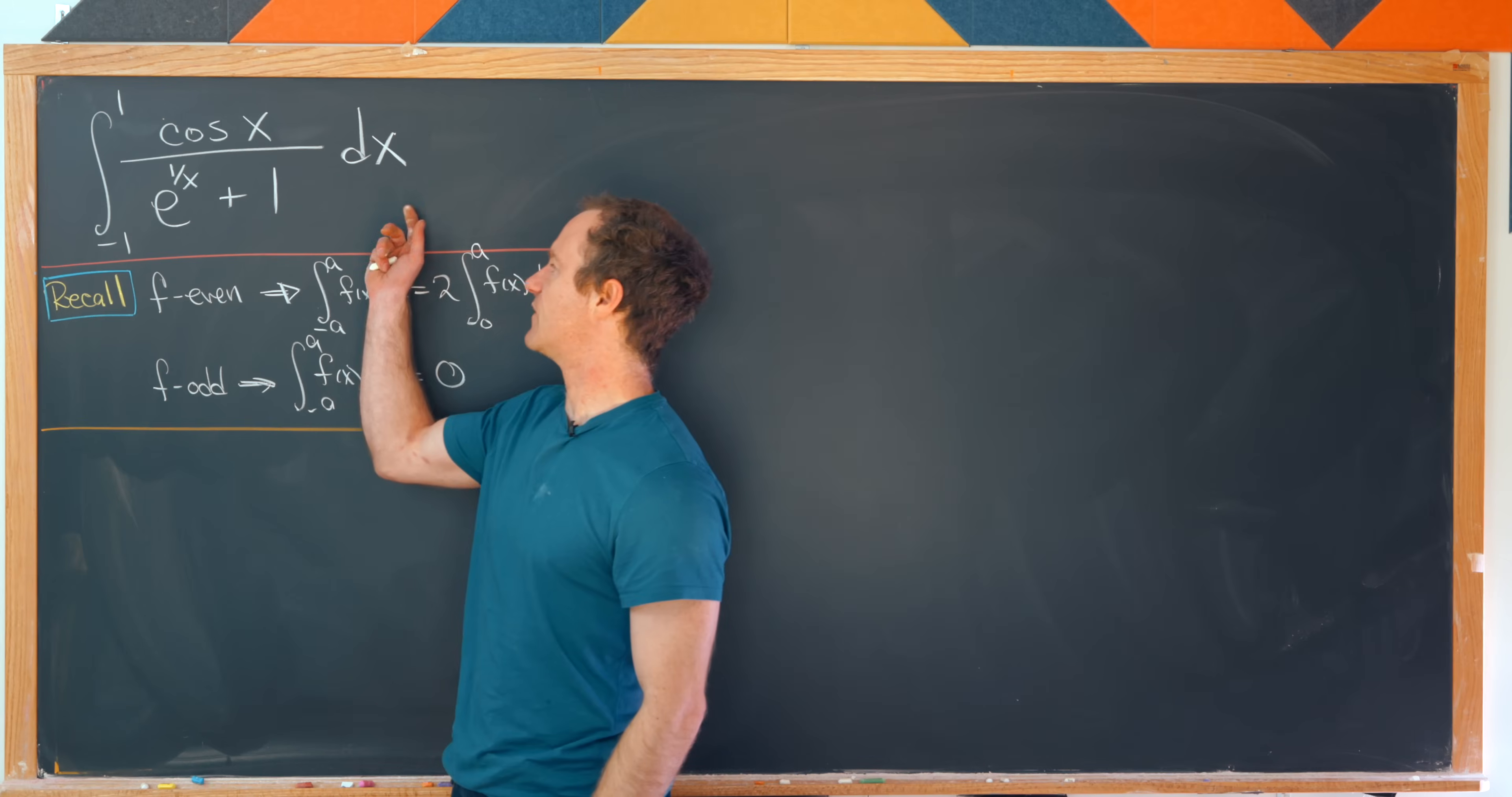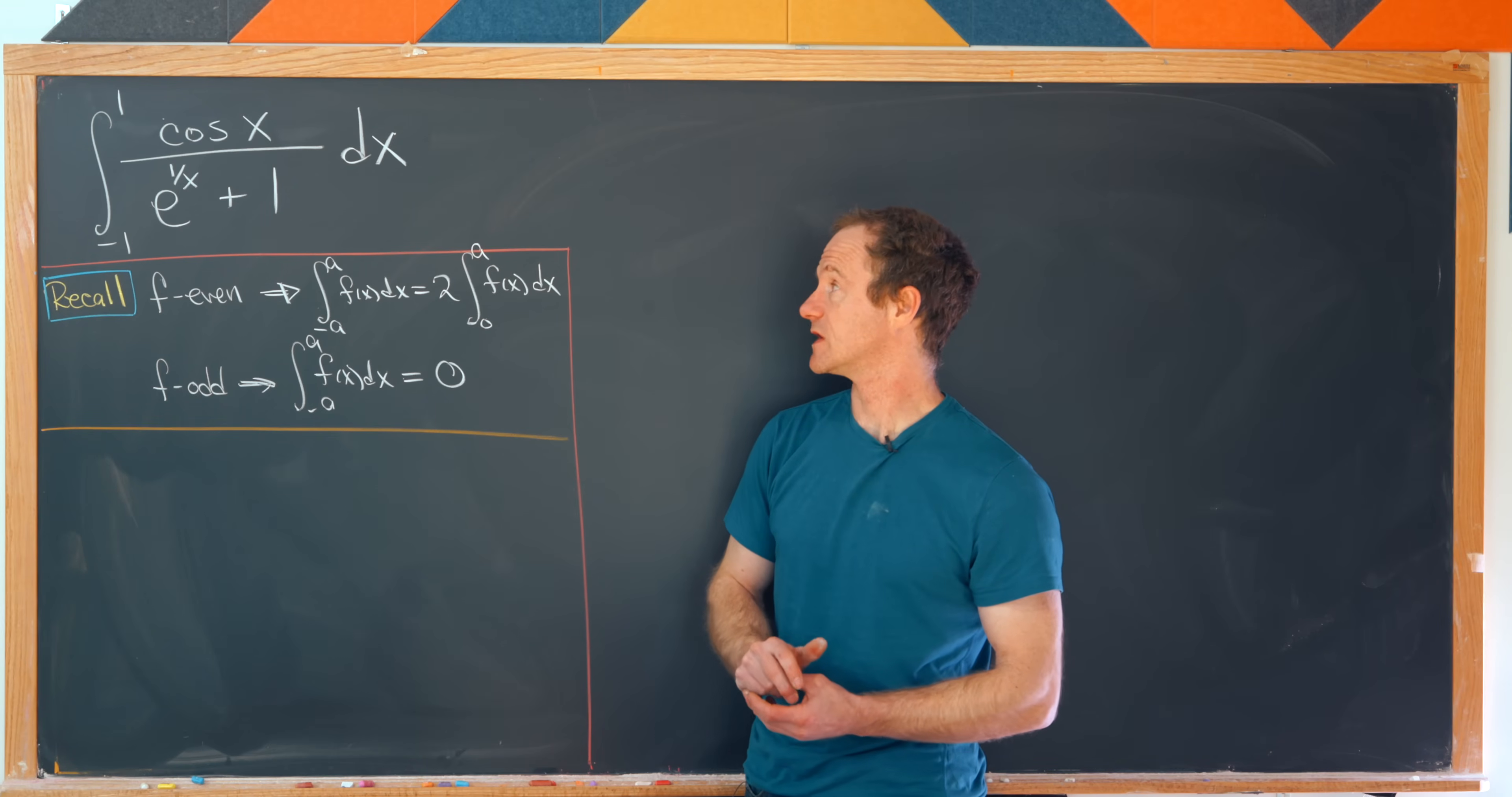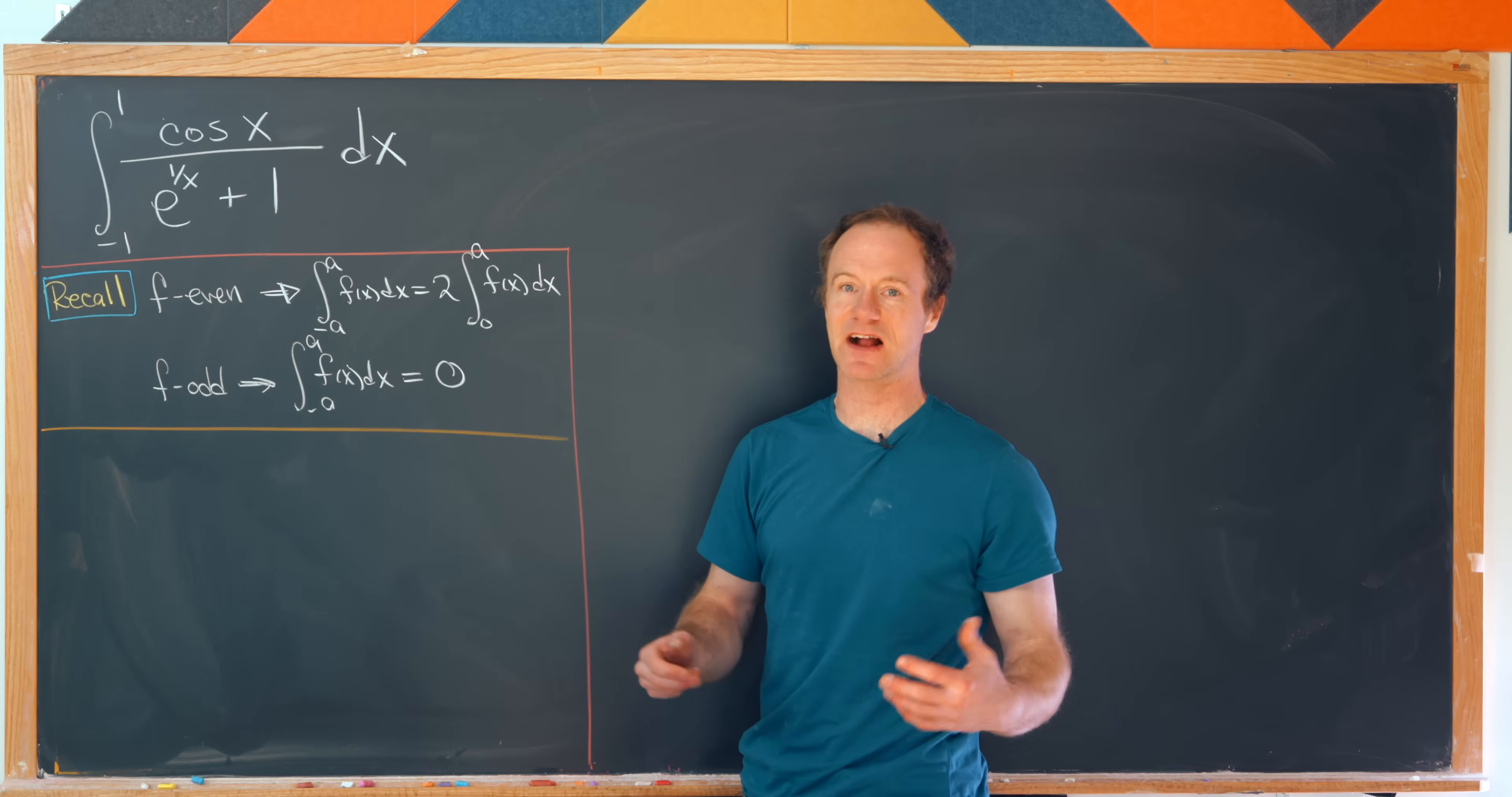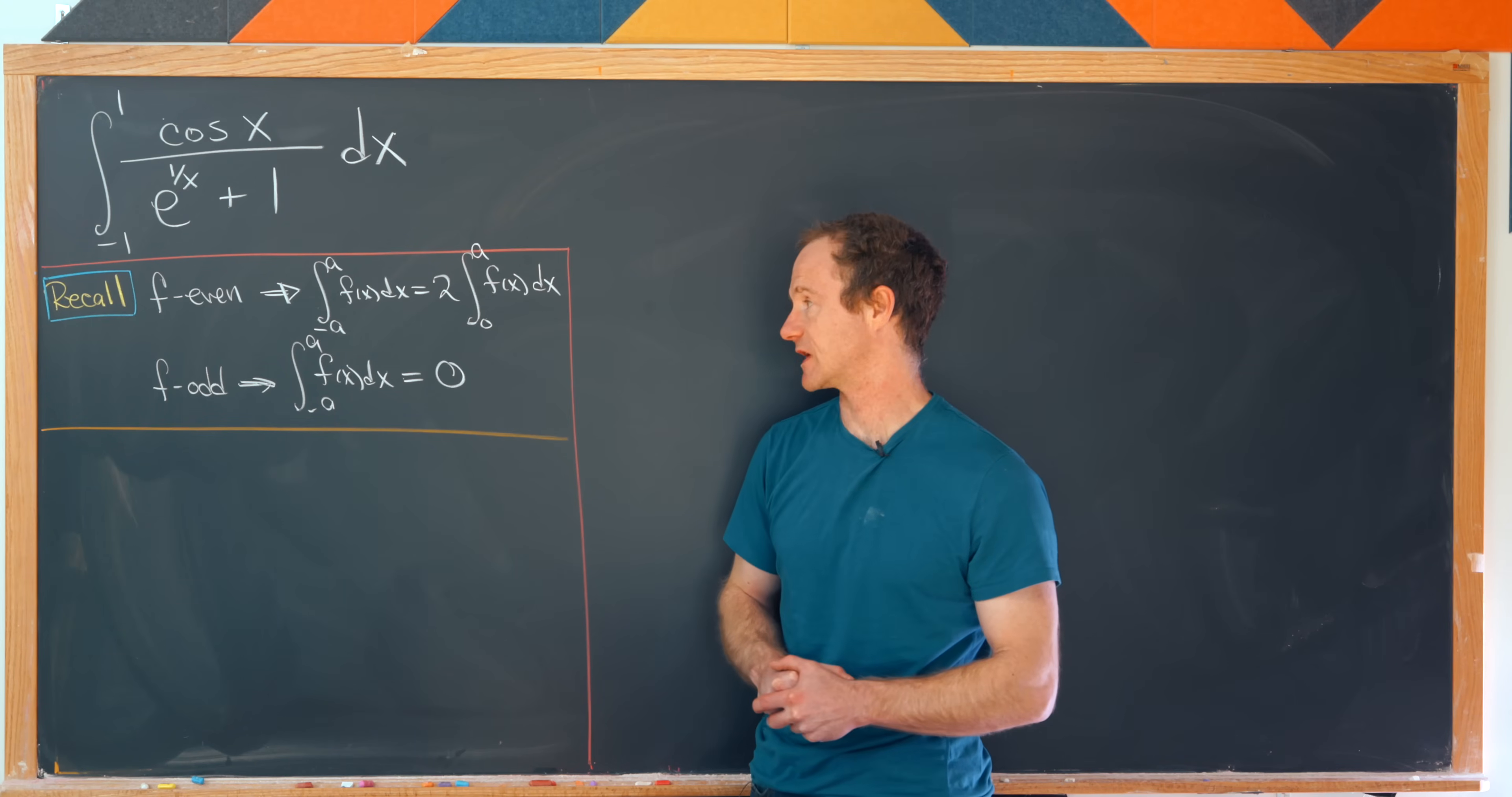So today we'd like to evaluate the integral from negative one to one of cosine of x over e to the one over x plus one dx. Like I said, that function looks really gnarly. And how could we take its integral? Well, we're going to use some facts about even and odd functions as well as something that points towards this integral being happily constructed because we get a major simplification.